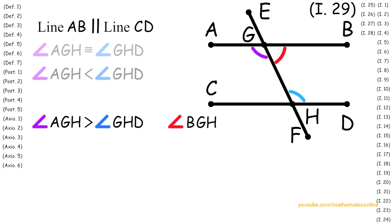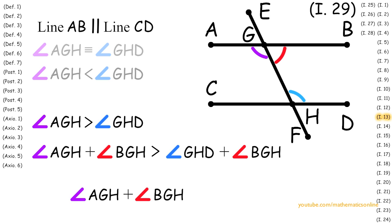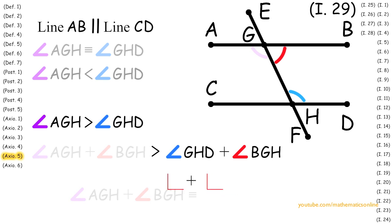With angle BGH, we apply Axiom 5 to get angle AGH plus angle BGH is greater than angle GHD plus angle BGH. By Proposition 13, we know that the adjacent angles AGH and BGH are congruent to the sum of two right angles. Since the same adjacent angles are greater than the sum of angles GHD and BGH, then by Axiom 5, angle GHD and angle BGH are less than the sum of two right angles.